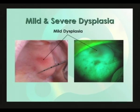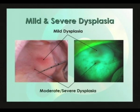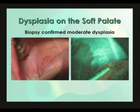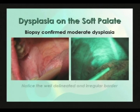Our first example of dysplasia is an interesting one where the larger, more obvious area in white light was confirmed by biopsy to be mild dysplasia. The smaller, less obvious area under white light, which looks darker with more well-delineated borders under VELscope, was found by biopsy to be moderate to severe dysplasia. This is an example of a large area of leukoplakia on the soft palate confirmed by biopsy to be moderate dysplasia. Under VELscope, the leukoplakia presents as a dark area in stark contrast to adjacent healthy tissue, with a well-delineated and irregular border.